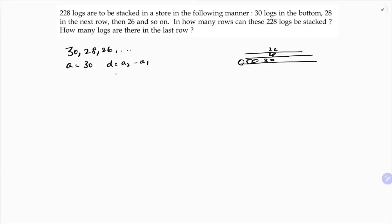So here the first term is 30 and common difference is a₂ minus a₁, which is 28 minus 30, which is minus 2. Now total logs are 228, so sum of all the logs is 228. Here they're asking in how many rows can these 228 logs be stacked, so they're asking here n.